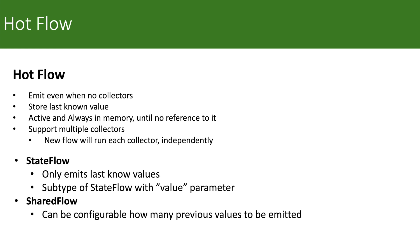Next is the hot flow. Hot flow is the complete opposite of cold flow. In the hot flow, you emit data even when there are no collectors — the producer is always active and in memory. It stores the last values and keeps a memory reference. You need to be careful about garbage collection since the hot flow maintains a specific state and flow reference in memory.